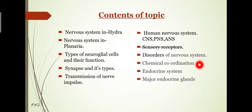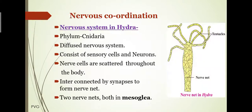Next is chemical coordination, in which we study the endocrine system. There are different types of endocrine glands, and from these we study the major endocrine glands. First we continue with nervous coordination and study the nervous system in hydra.